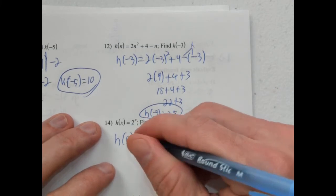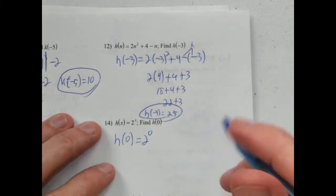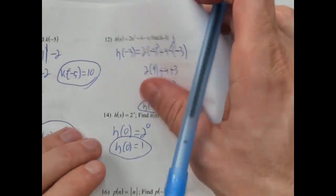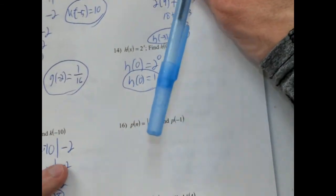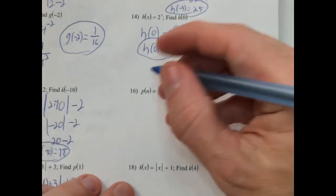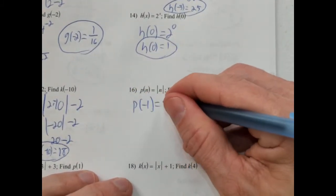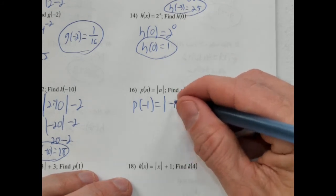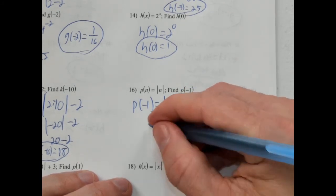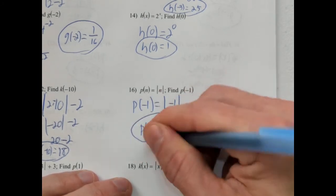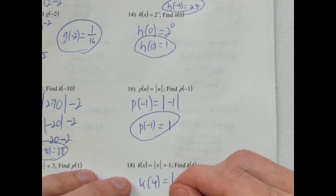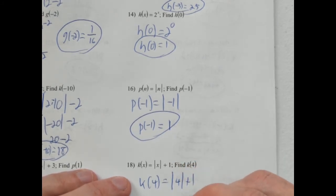h of 0: 2 to the 0 power — anything to the 0 power is equal to 1. So h of 0 equals 1. Then p of negative 1: the absolute value of negative 1 is 1, since absolute value represents distance from 0. So p of negative 1 is 1. And k of 4: absolute value of 4 plus 1 — absolute value of 4 is 4, plus 1 is 5. So k of 4 is 5.